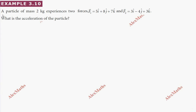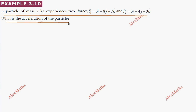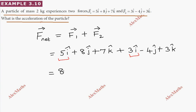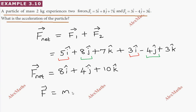Hi students, this is Alex here. Example 10: a particle of mass 2 kg experiences two forces. The net force is F1 vector plus F2 vector. F1 is 5i plus 8j plus 7k, and F2 is 3i minus 4j plus 3k. Adding components: i gives 8i, j gives 4j, k gives 10k. So F net vector is 8i plus 4j plus 10k. This equals m times a vector.